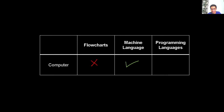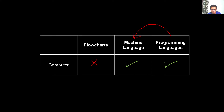Programming languages are also not directly understood by the computer. However, they can be converted to machine language using certain software. Hence, we can give instructions in programming languages. The programming language we are going to use in this video is C++.